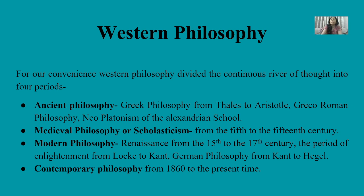Western Philosophy can be divided into four periods. First, Ancient Philosophy, which started from Plato and Socrates — philosophy from Thales to Aristotle, Greco-Roman Philosophy, and Neoplatonism of the Alexandrian School. Then Medieval Philosophy, also called Scholasticism, during the 5th to 15th century. Then Modern Philosophy — the Renaissance from the 15th to 17th century, the period of Enlightenment, and German Philosophy from Kant to Hegel. And now Contemporary Philosophy is ongoing, from 1860 to the present time.